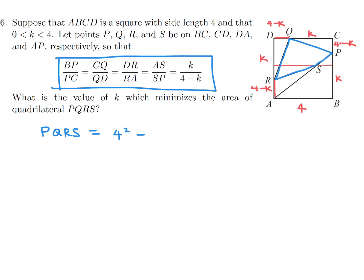To find the area of PQRS, I take the entire square — that's 4 squared equals 16 — and subtract the four corner triangles. The first triangle has area one-half times K times 4 minus K. The second triangle is also one-half times K times 4 minus K. The third large triangle is one-half times base 4 times height K. The fourth triangle is a bit trickier.